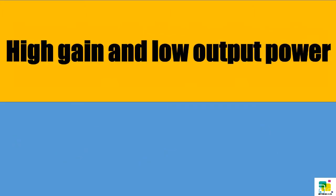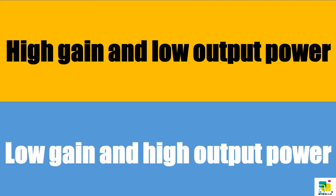In a repeater we have high gain and low output power, and in an amplifier we have low gain and high output power.